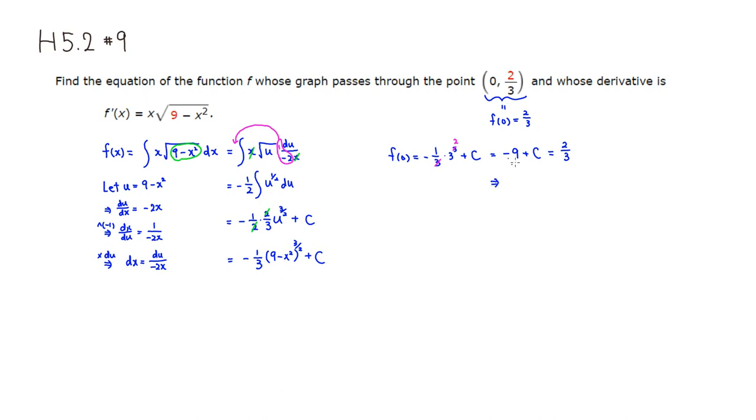So we can find the c value by adding 9 to both sides. So you have c is equal to - 9 is, let's see, 27 over 3. So 27 plus 2 is 29 over 3. So therefore, we have a complete formula for f of x.